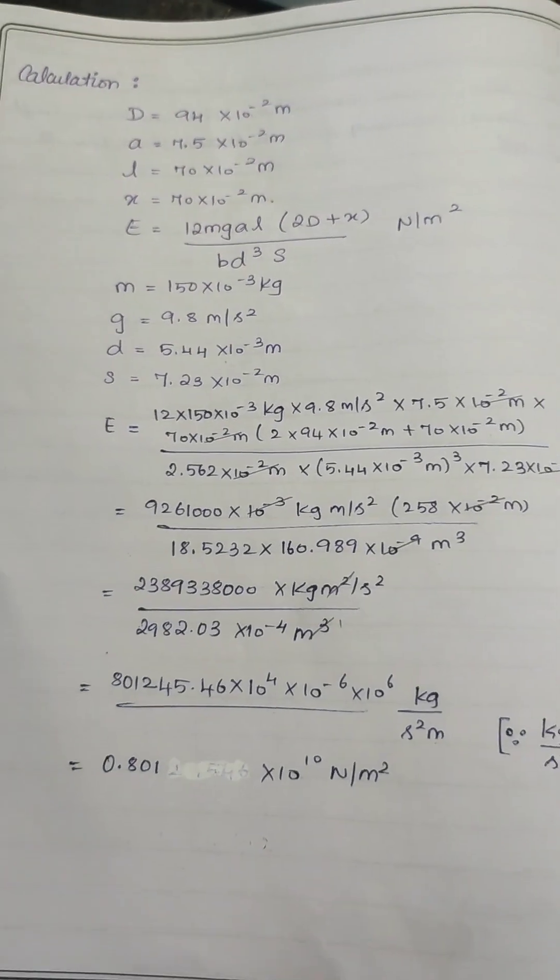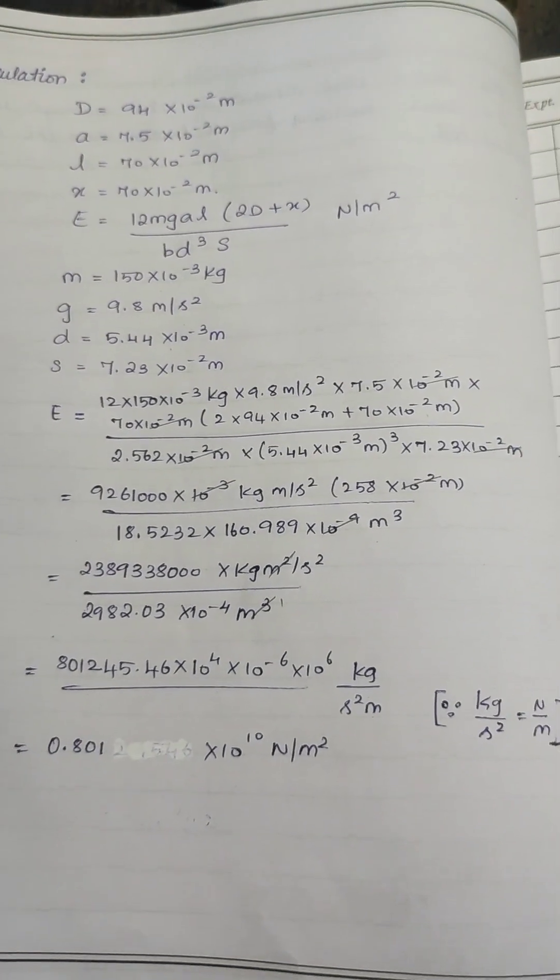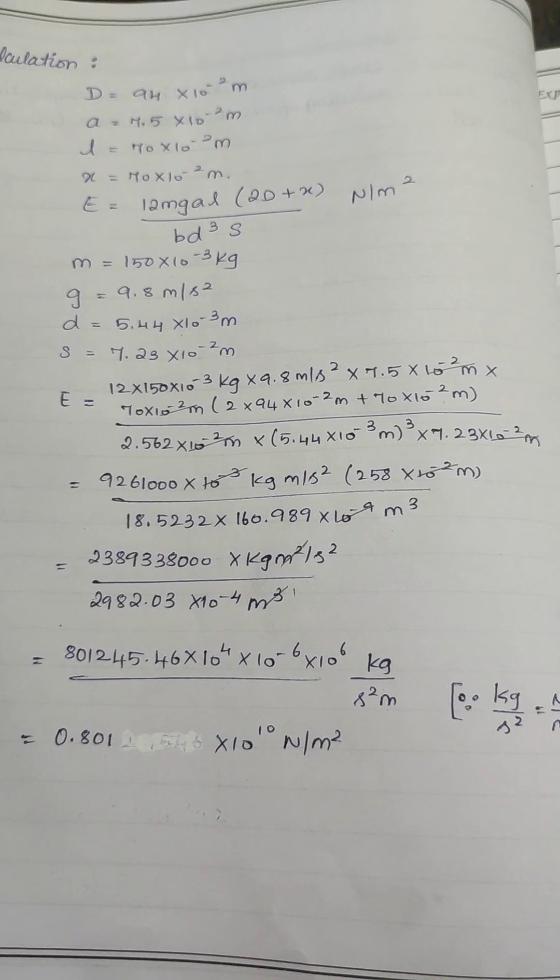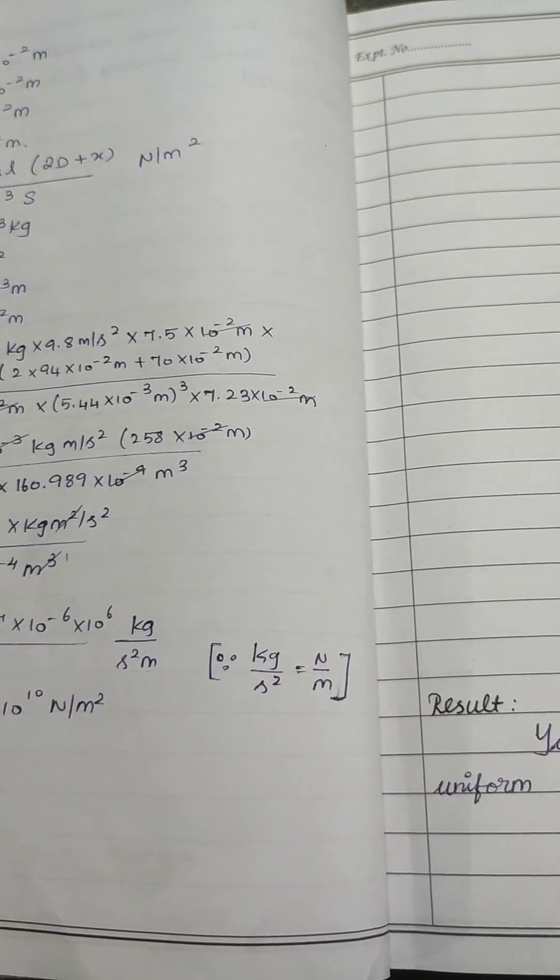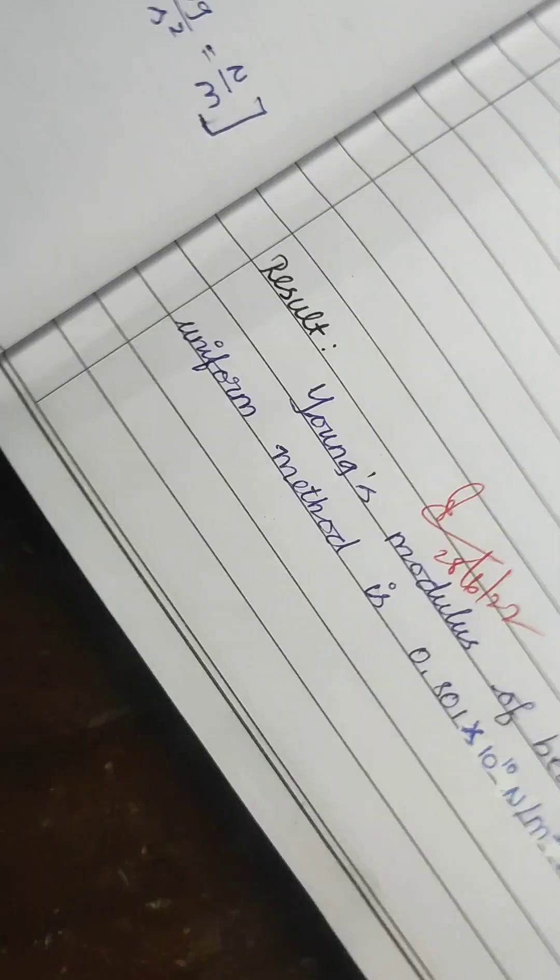The variables d, a, l, x, c are already described on the first page. Substituting all these values, we have measured the Young's modulus of the beam by Coining's method.